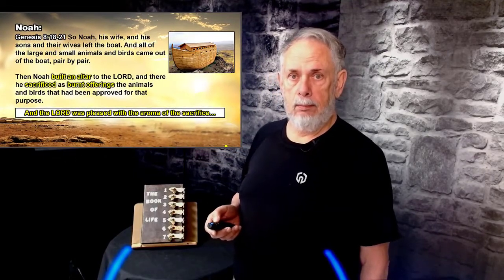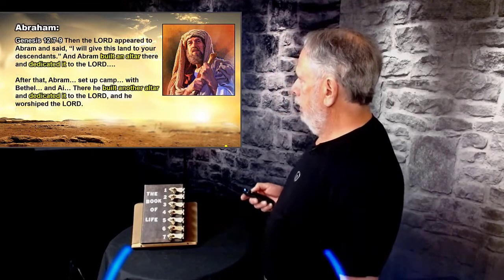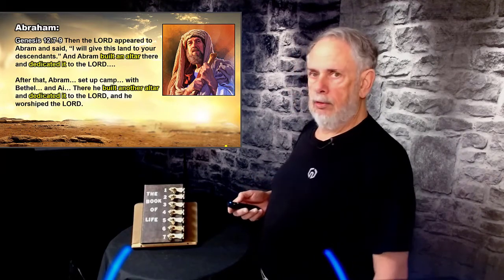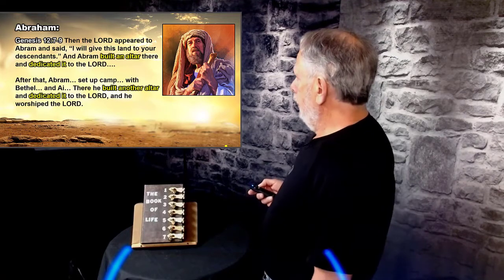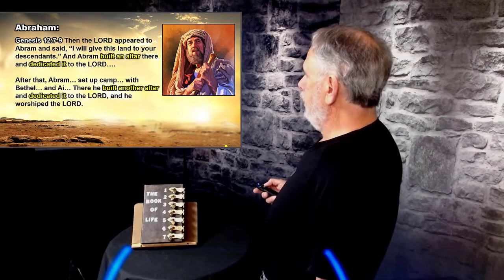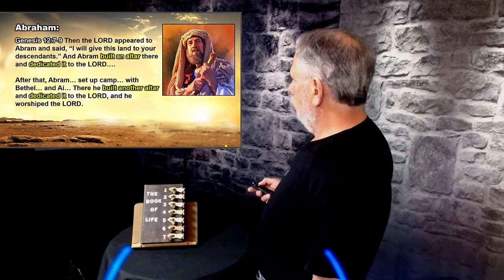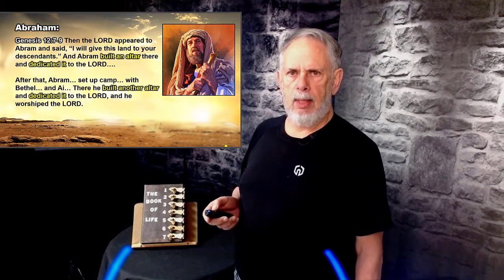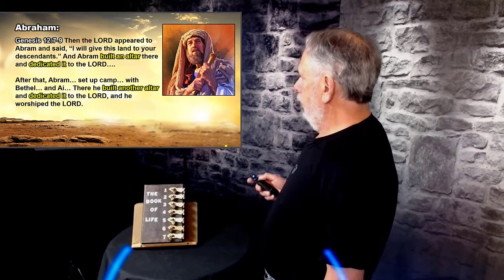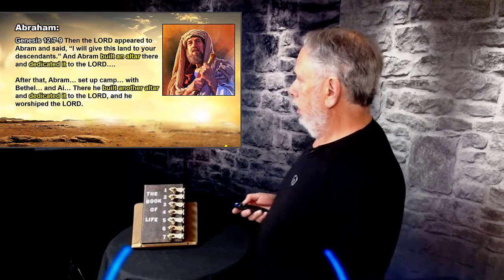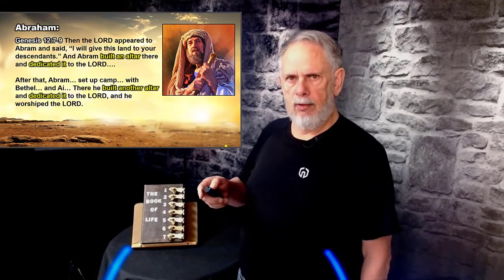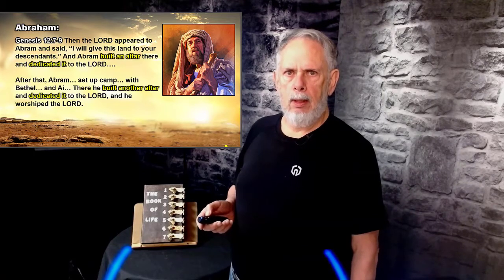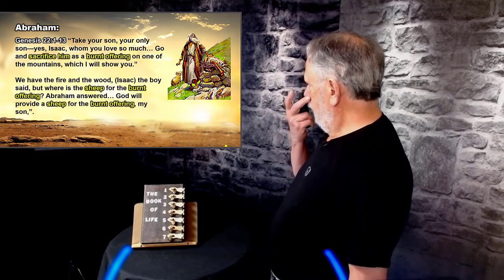After the flood, when Noah landed on dry land, the first thing he did was build an altar and sacrifice animals to God. Now let's move ahead to Abraham — initially called Abram. In Genesis 12:7-9, the Lord appeared to Abram and said 'I will give this land to your descendants,' so Abram built an altar there and dedicated it to the Lord. After Abram set up camp between Bethel and Ai, he built another altar, dedicated it to the Lord, and worshiped God.